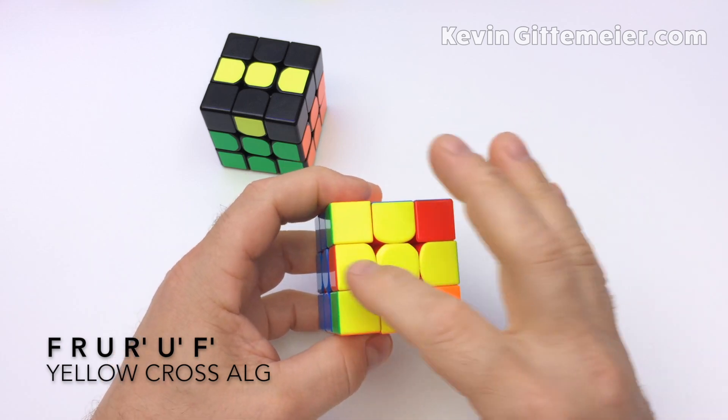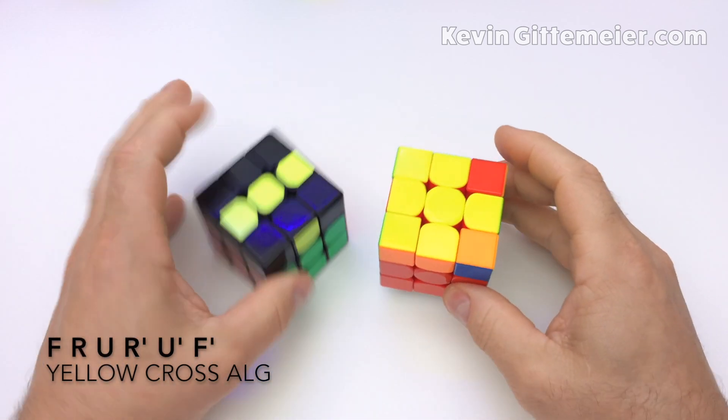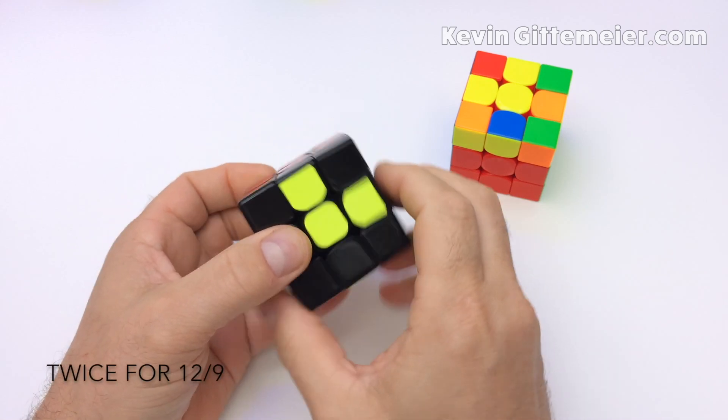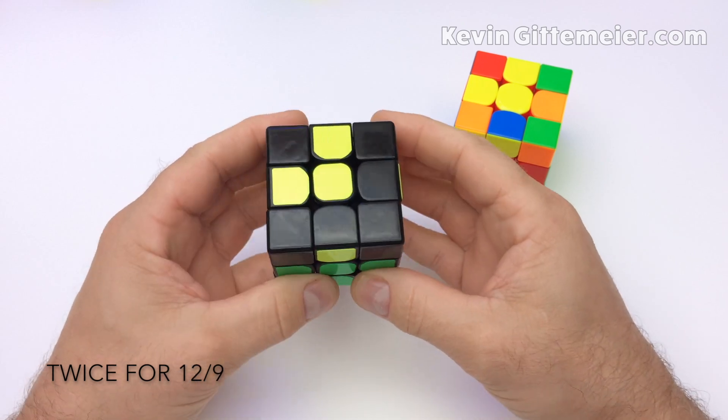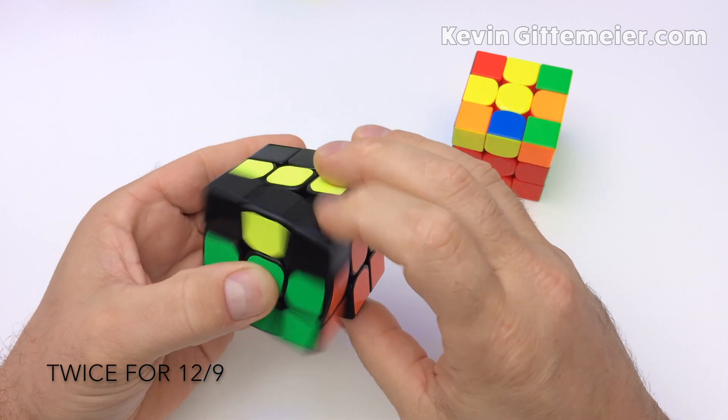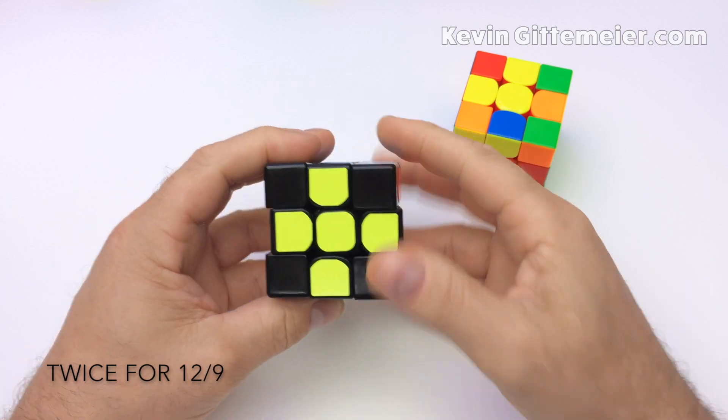Again, disregard corner pieces. We're just looking at these right now. If we have two yellows perpendicular to each other, we hold them in the 12 o'clock, nine o'clock position and perform the algorithm twice. Once creates the line and then again creates the yellow cross.